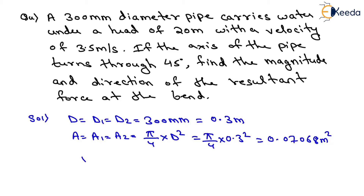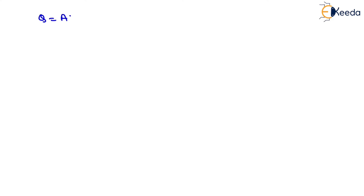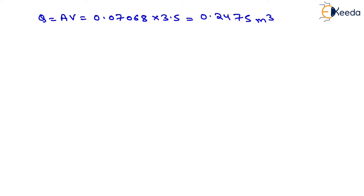Velocity v = v1 = v2 = 3.5 m/s, as given in the question. Similarly, θ = 45°, also given. From the continuity equation, Q = A × v = 0.07068 × 3.5, giving us Q = 0.2475 m³/s.